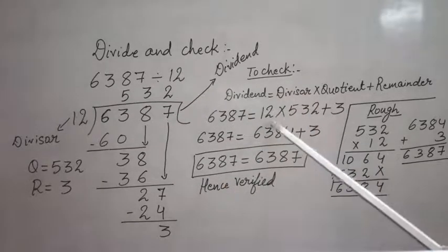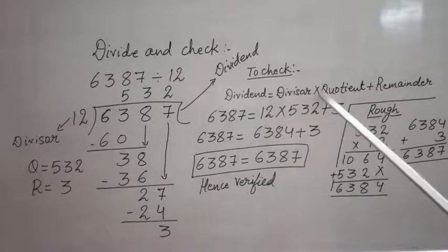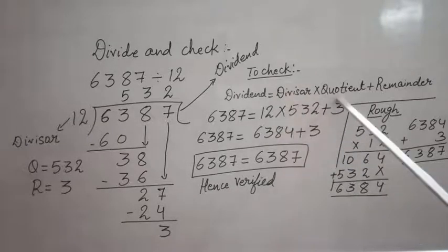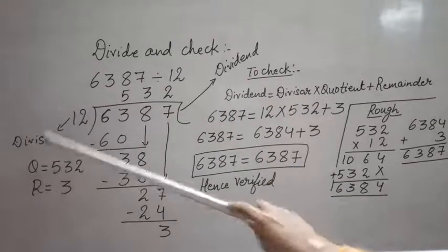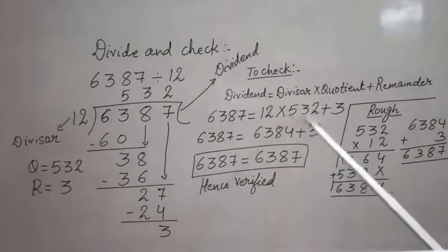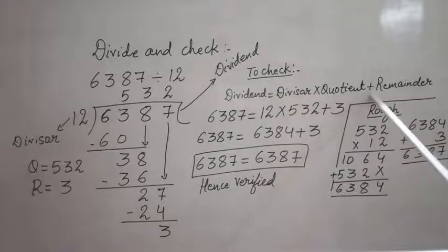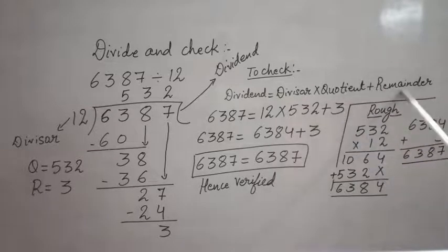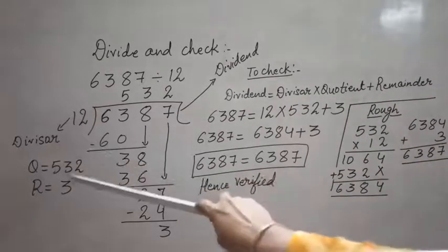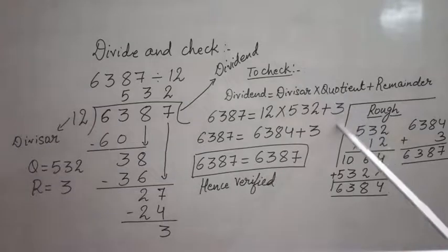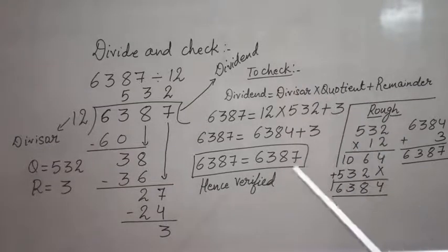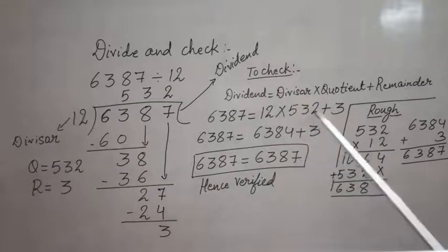So I have written here 12, then times, then I have to write quotient. My quotient is 532, so here I have written 532, then plus, then what I have to write? Remainder. And my remainder is 3, so I have written here 3.